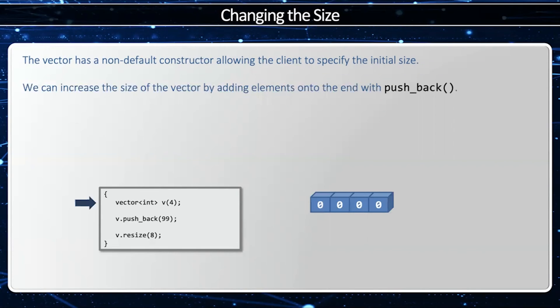Now we can increase the size of the vector by adding elements onto the end with pushback. In this case, I'm going to say pushback(99), and this will put 99 on the back of the vector. Notice how the size went from 4 to 5.